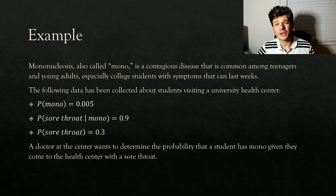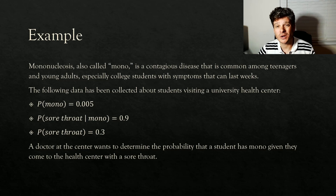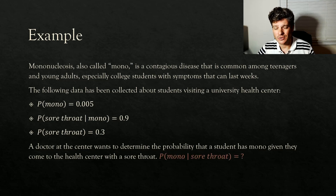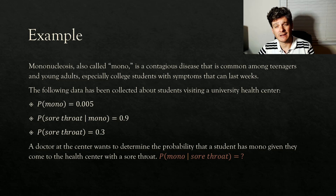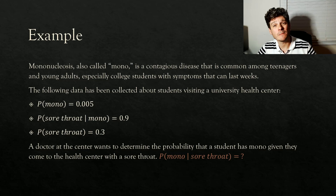What we're looking for is a different conditional probability — the probability the student has mono given they have a sore throat. If you notice, that is actually the reverse of one of the probabilities we already know. We know the probability that a student has a sore throat given they have mono is 0.9. We want to know the reverse of that. And that's where Bayes' theorem comes in — it relates those two probabilities together.